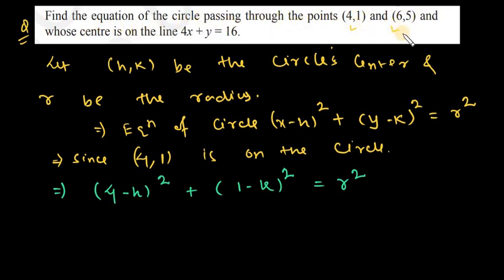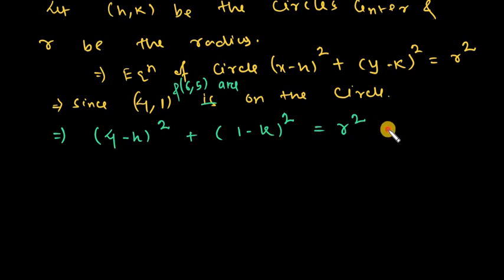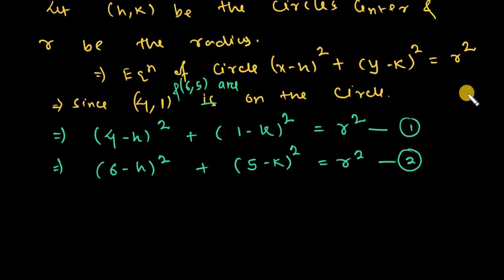Since the circle also passes through point (6,5), substituting: 6 minus h whole square plus 5 minus k whole square is equal to r square. This is Equation 2.